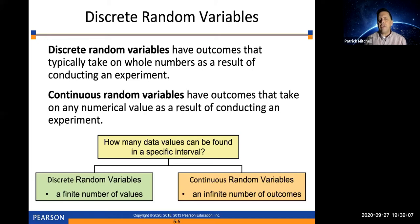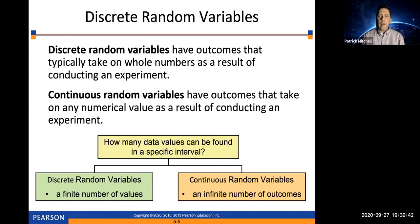Within a specific bounded interval, a discrete random variable will only have a finite number of values, whereas a continuous random variable would have an infinite number of outcomes — such as all real numbers between one and five. There's an infinite number of those, but between one and five there are only a finite number of whole numbers: two, three, and four, and possibly one and five depending on whether those are included.